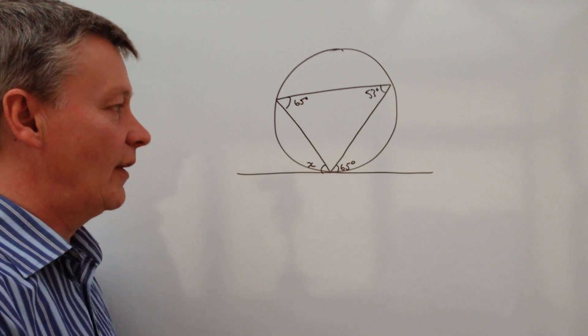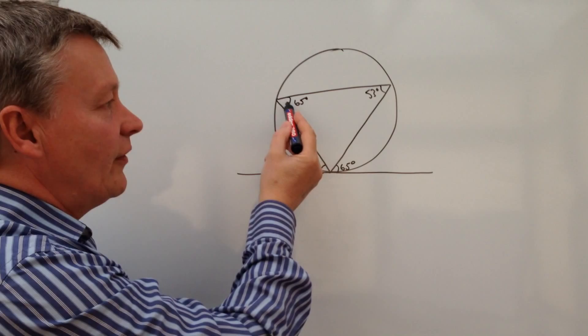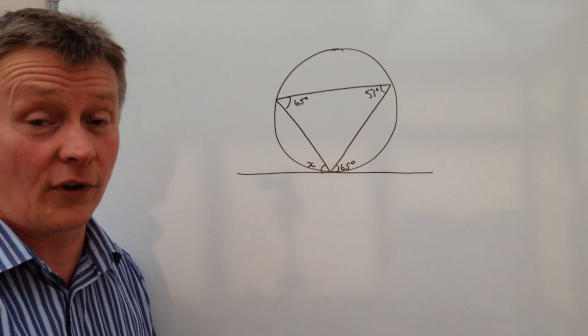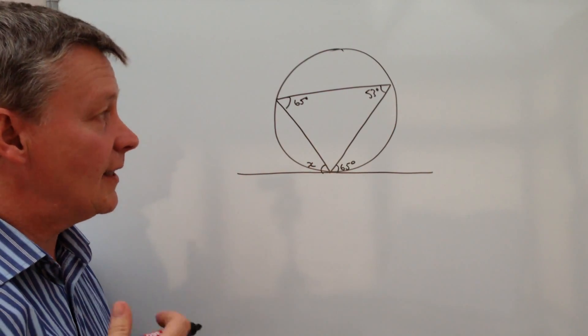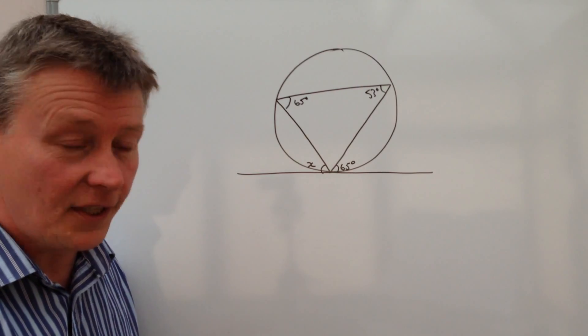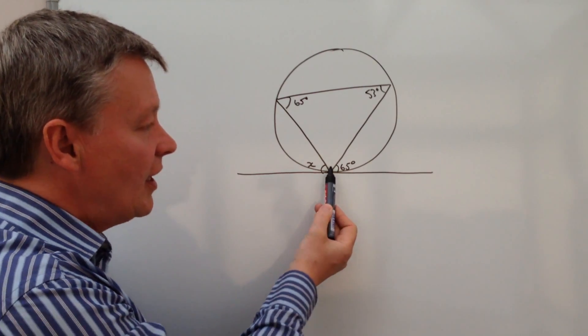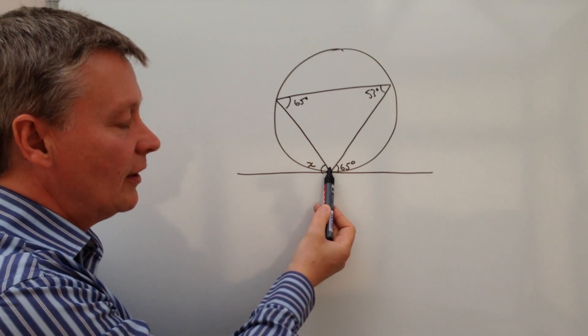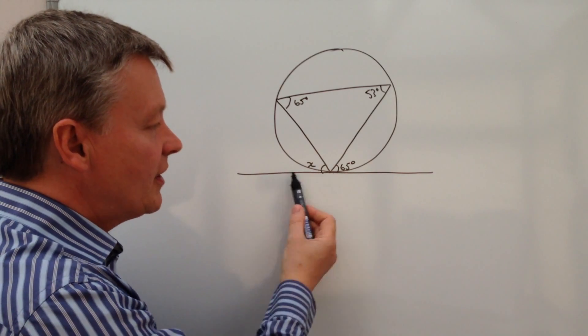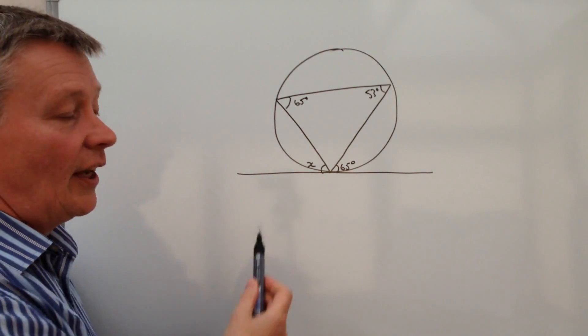If this is 65 degrees and this is 53, then that's great because we've got a triangle. As we know, the internal angles of a triangle add up to 180 degrees. So what it's going to allow me to do is find this little bit in the middle, and then once I've got that, I can just take that away from the 180 degrees of a straight line and that'll give me the value of x.